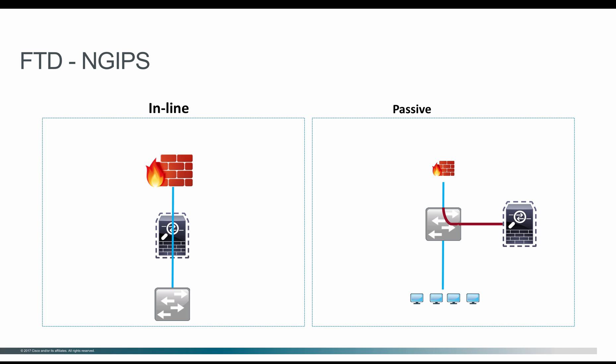Unlike routed or transparent firewall mode, where you need a command to change the mode on FTD, when you deploy it as NG IPS it can coexist with either transparent or routed firewall. They don't have a separate mode themselves. So if you deploy FTD in routed or transparent mode, interfaces that are unused or not assigned for the next-gen firewall can be deployed as NG IPS.